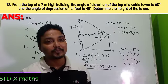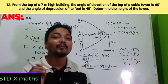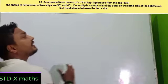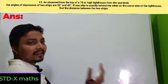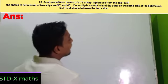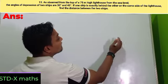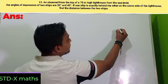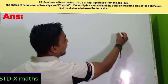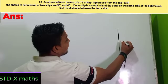The height of the tower = DE + EC = 7√3 + 7 = 7(√3 + 1) meters. Now we will do another two-triangle question. Here a lighthouse of height 75 meters is given.